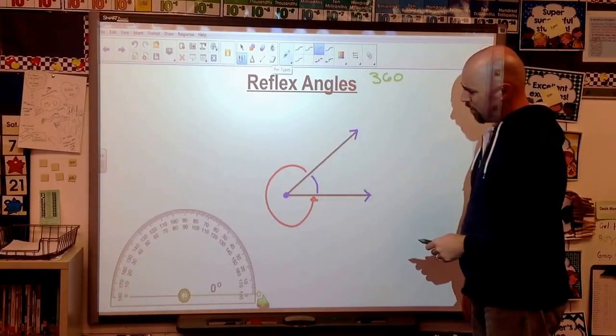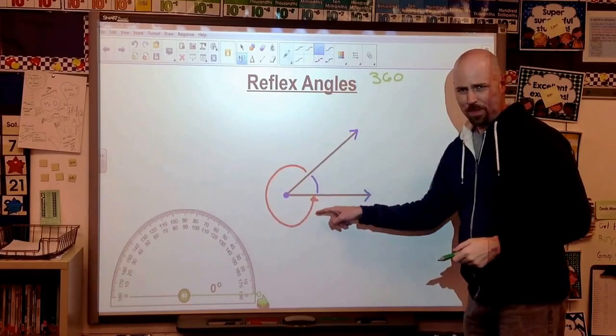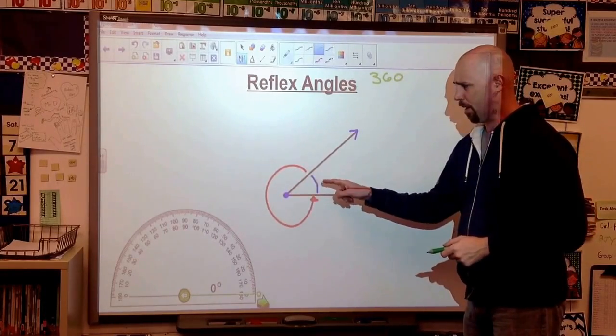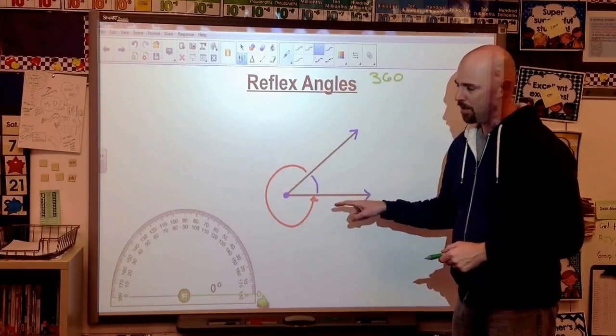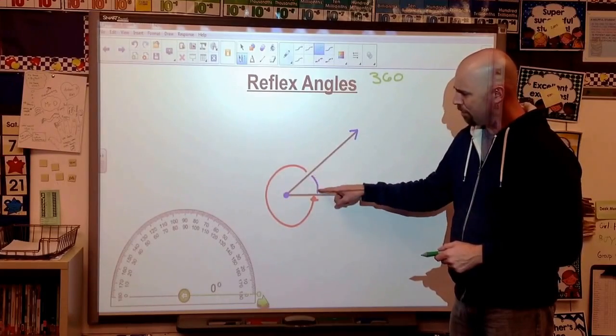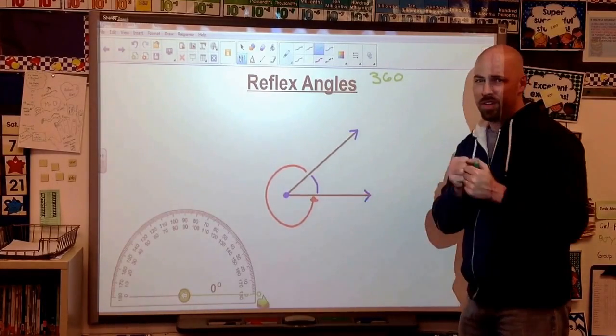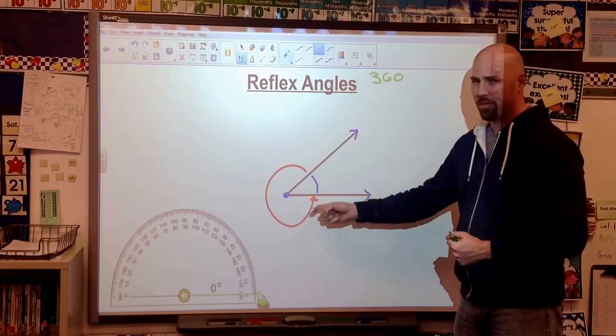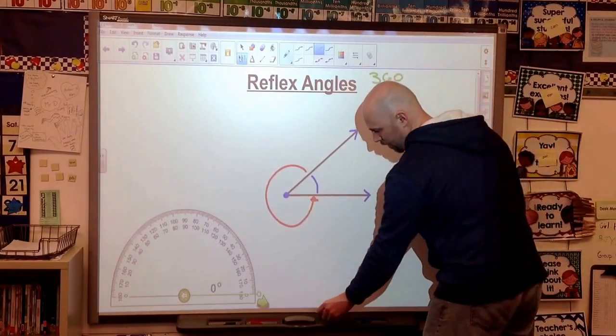So maybe I can't measure this big red part with my protractor. My protractor's not going to bend around like that. But if I can measure this little piece here and then remove it, whatever's left over is going to be my angle. Let me show you how this works.